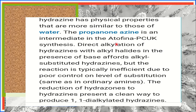Propanone azine acts as an intermediate in this reaction. Direct alkylation of hydrazines with alkyl halides in the presence of a base affords alkyl-substituted hydrazines. But the reaction is typically inefficient due to poor control on the level of substitution, same as in ordinary amines. The reduction of hydrazones to hydrazines presents a clean way to produce 1,1-dialkylated hydrazines.